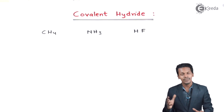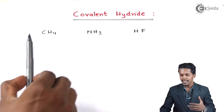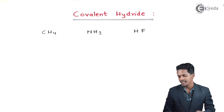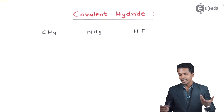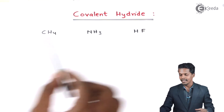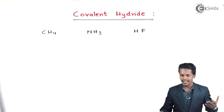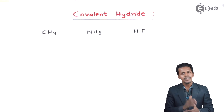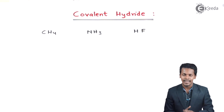CH4 is in a gaseous state and covalent hydrates form a covalent bond between each other. In ammonia and HF it is the same case. There are also certain classifications we can see in covalent hydrates.